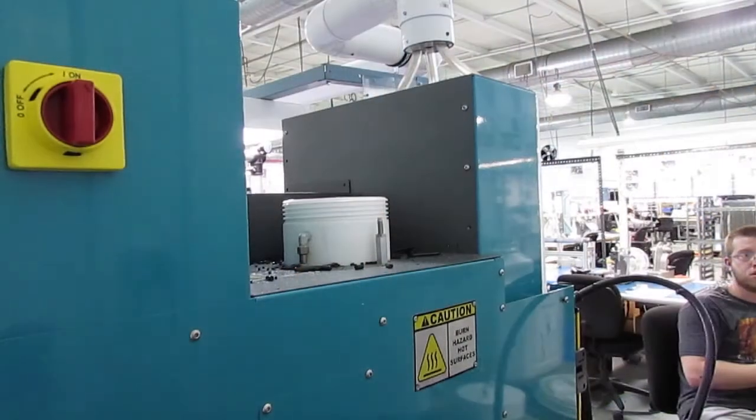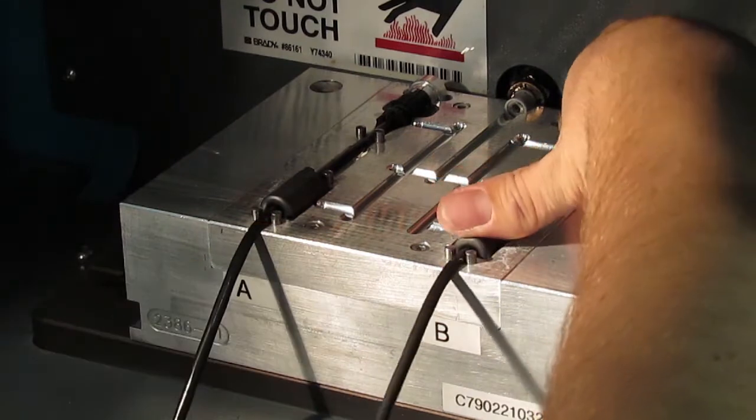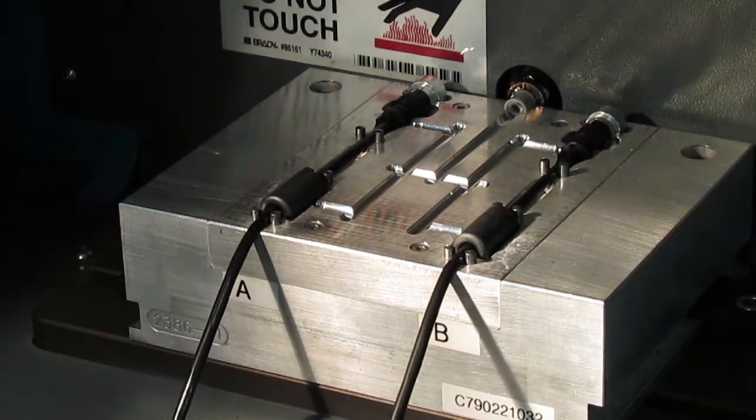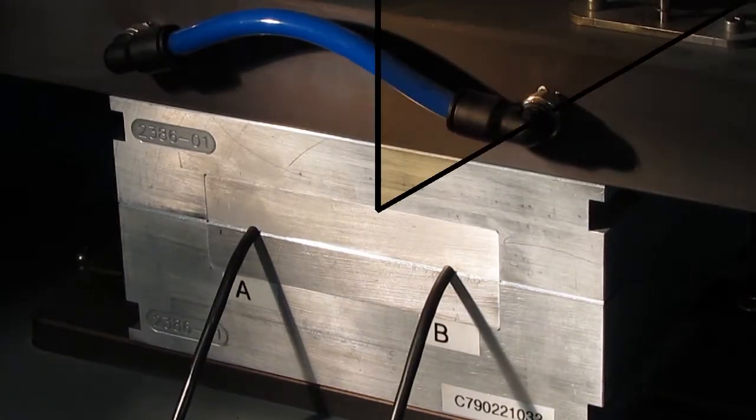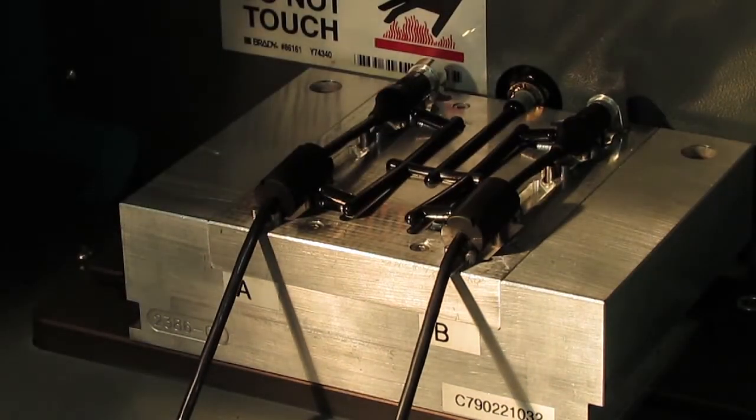So for higher volumes, over-molded strain relief is usually more economical. The cable assembly is placed into a mold, and then resin is injected into the mold to encase the cable and connector. This provides a strong and water-resistant strain relief.